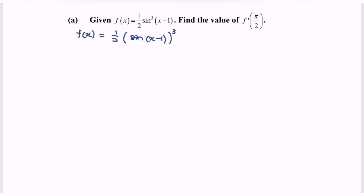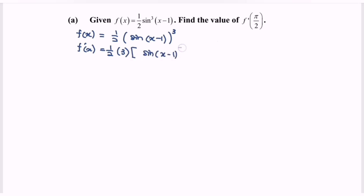Next, differentiate with respect to x. We have f'(x) equals 1 over 2. Focusing on the power, we will have 3 times sine of (x minus 1) to the power of 2.